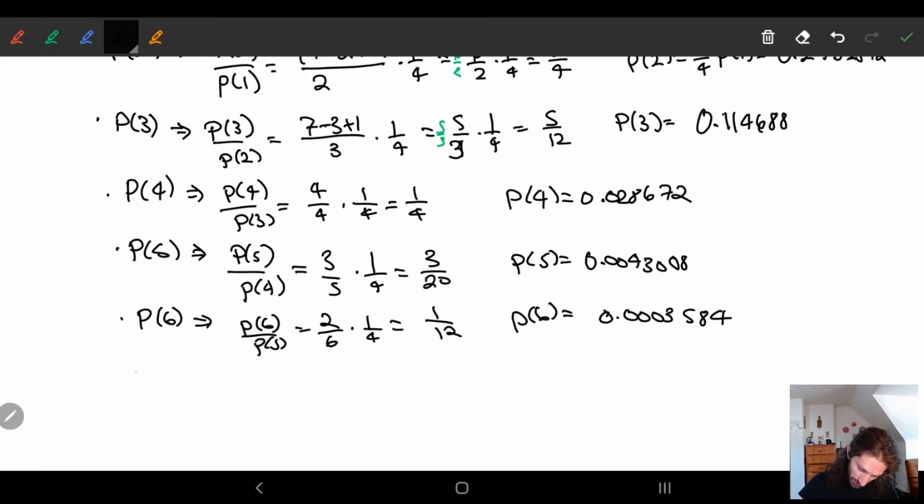And then finally p of seven over p of six is equal to one-seven times one over four, which is one over twenty-eight. So we get p of seven is equal to 0.0000128.